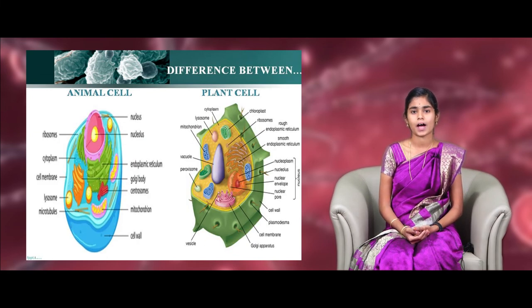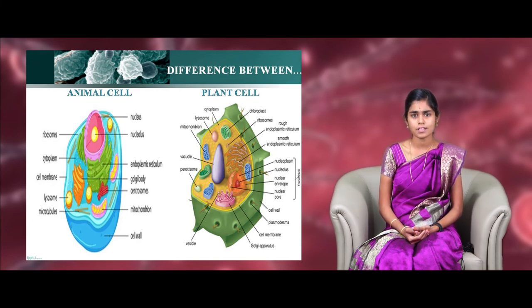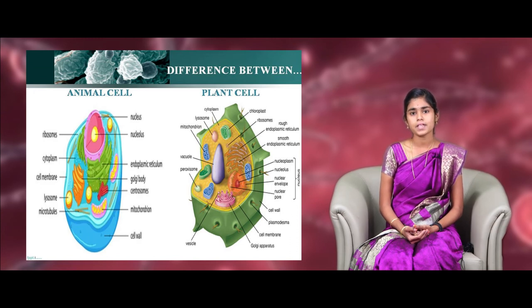Then, we come to the comparison of animal cells and plant cells. Again, look into the picture. Do you find any differences? Plant cells are rectangular in shape whereas animal cells don't have regular shape. Sometimes, it will be in circular in shape. Plant cells produce energy by the process of photosynthesis whereas animal cells produce energy by the process of respiration. Plasma membrane and endoplasmic reticulum are present in both cells. But, centromeres are present in animal cells but absent in plant cells.